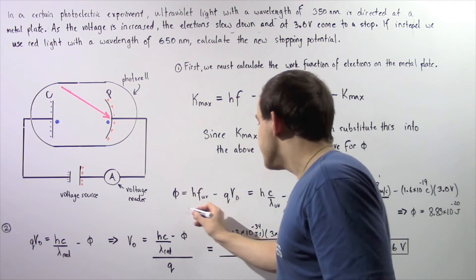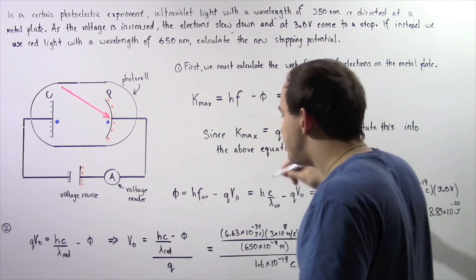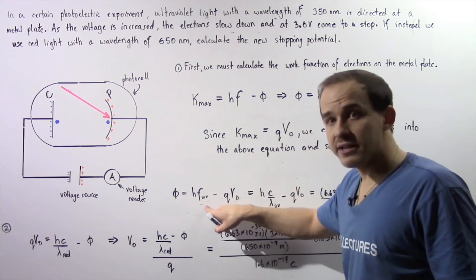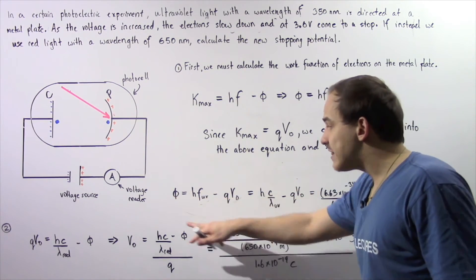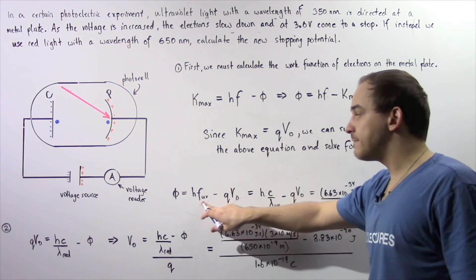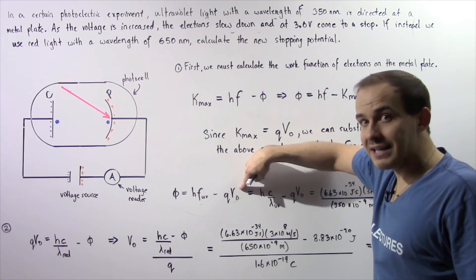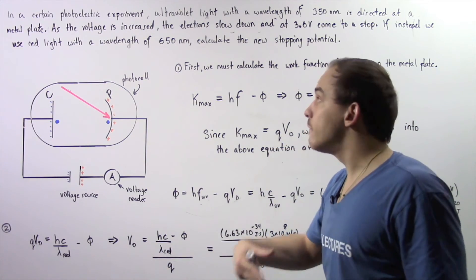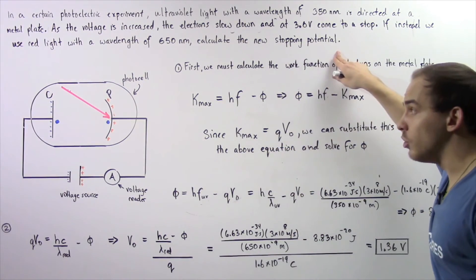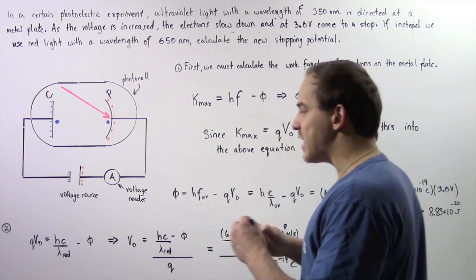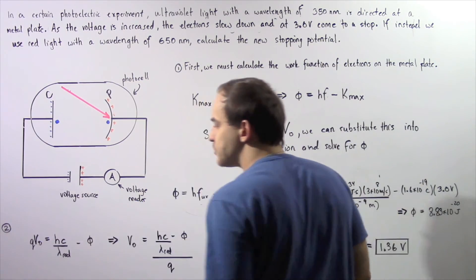So now we can take this same equation and basically replace F UV with F red light. If we take this equation, replace F UV with F red light and solve for V naught, that will give us the voltage, the stopping voltage that is required when using red light. And that's exactly what we do in step 2.